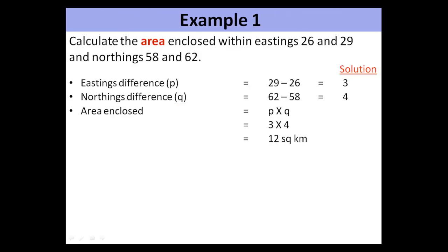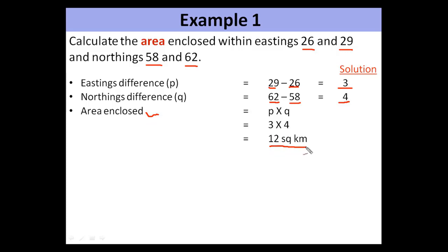Here is an example to show how to calculate the area enclosed within eastings and northings. Between easting 26 to 29, there are 3 grids, and between northing 58 to 62, there are 4 grids. Using P × Q, the area enclosed will be 3 × 4 = 12 square kilometers on the topographical map. In this manner one can calculate the area enclosed within given eastings and northings.